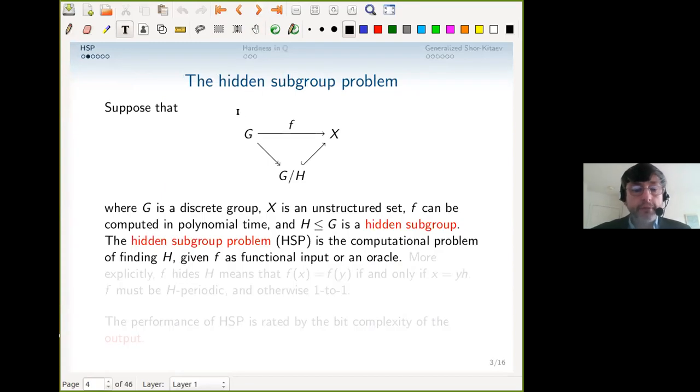Let me introduce this question. We have a discrete group G and an unstructured set X. We have a function that factors through G mod H, where H is some subgroup, and is otherwise injective.